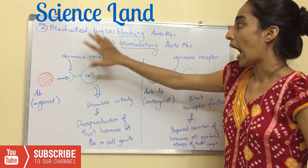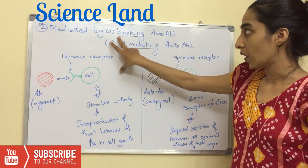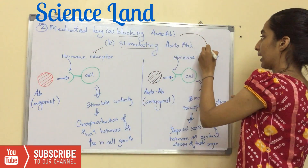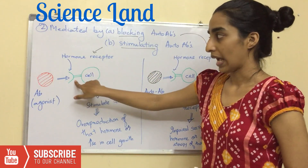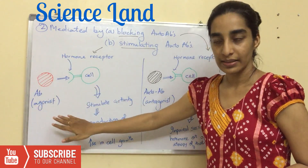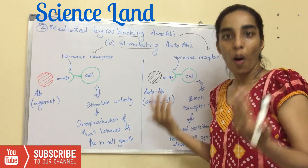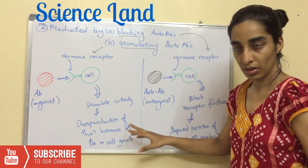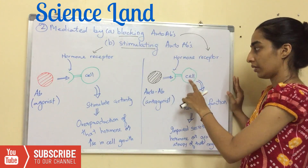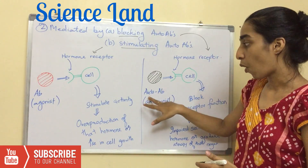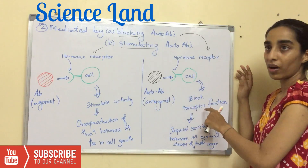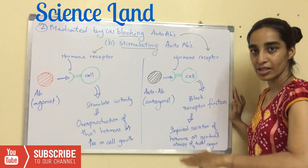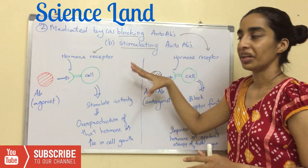Now let me explain how organ autoimmune disease is mediated by either a blocking or stimulating autoantibody. For a stimulating autoantibody: a cell has a hormone receptor, and an antibody acts as an agonist — it acts like a hormone and stimulates the activity of that cell, leading to overproduction of that hormone or increased cell growth. For a blocking autoantibody: the same cell has the same hormone receptor, but the autoantibody acts as an antagonist and blocks the receptor. If it is blocked, the hormone won't be secreted or will be secreted in lesser quantity, leading to gradual atrophy of that organ.